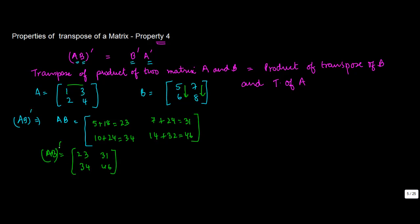And the transpose of this is going to be the transpose of this matrix. So you convert the first row into first column: 23, 31 becomes 23 and 31 in a column format. And then 34, 46 becomes 34 and 46 in column 2 format. So this is basically your left-hand side.